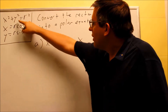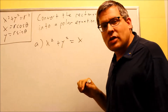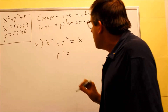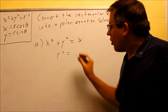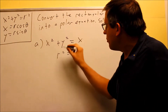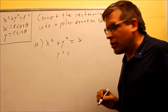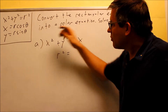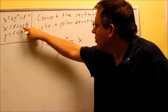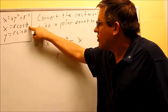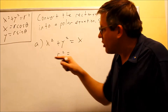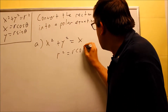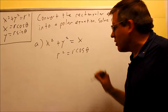Here's the original problem: x squared plus y squared equals x. One substitution we can make is x squared plus y squared — that's r squared. So I'm going to put r squared on the left-hand side. Then we replace the x on the right. Since x equals r cosine theta, we write r cosine theta in its place.